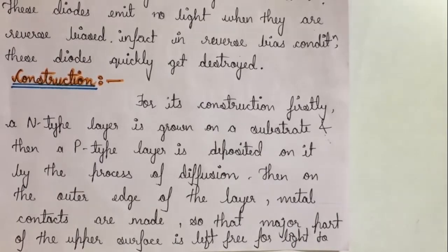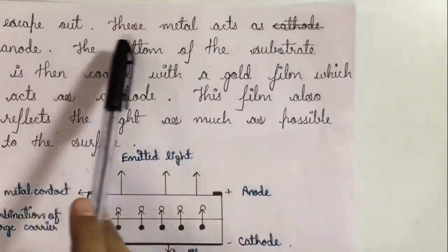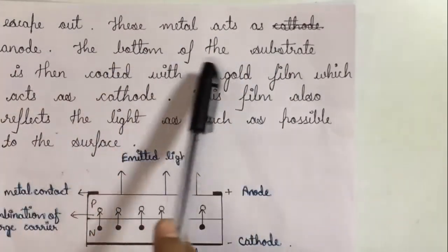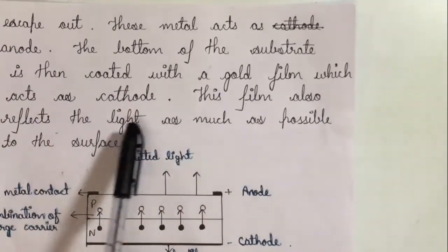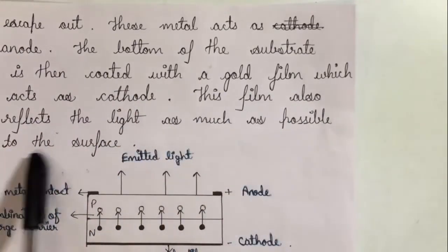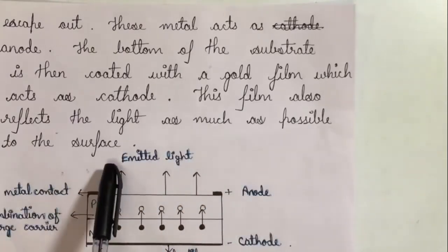These metal contacts act as anode. The bottom of the substrate is then coated with a gold film which acts as cathode. This film also reflects the light as much as possible to the surface.